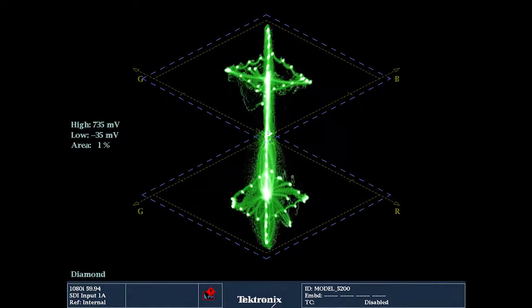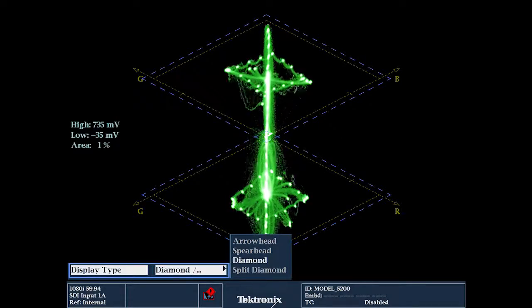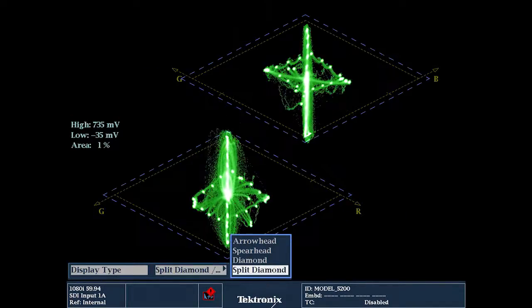To get a better view of the black transitions, simply split the two diamonds apart in the split diamond display.